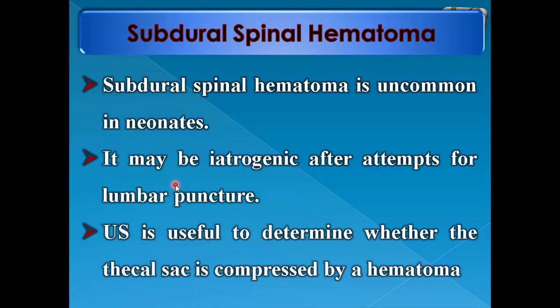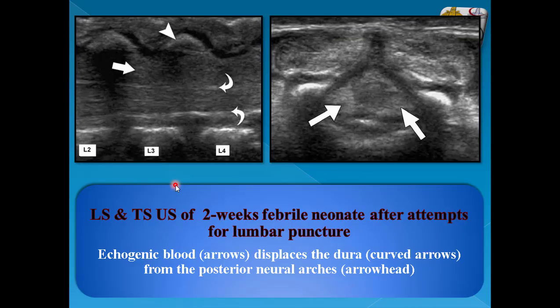Subdural spinal hematoma is uncommon in neonates but may be iatrogenic after attempts for lumbar puncture. Ultrasound is useful to determine whether the thecal sac is compressed by the hematoma. On LS and TS ultrasound images, this is the echogenic blood collection separating the dura mater from the posterior neural arch and surrounding the spinal cord. On TS the echogenic collection is blood.